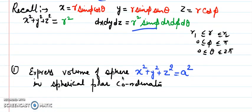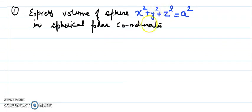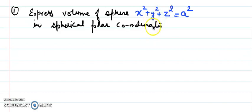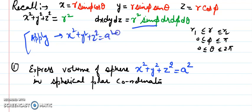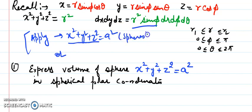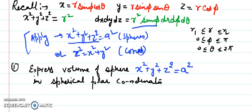Spherical polar coordinates are usually used when we have spheres in space. Apply it when you have an equation like x²+y²+z²=a², or when z²=x²+y² (cones). There are fewer problems involving cones; most questions are about spheres.